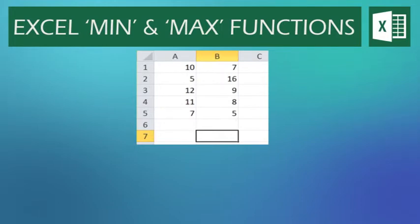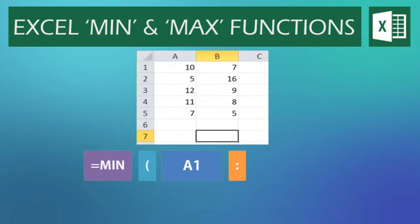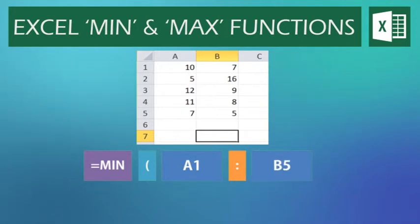MIN and MAX can also be used to find the smallest or largest value from a range of given cells. In this case, I want to look at all 10 cells from A1 to B5 and find out which is the smallest and which is the largest. To find out the smallest, I would type equals MIN, open brackets. Then the first part of the cell range, which is the top left-hand corner, in this case A1. As it is a cell range, I then use a colon before giving the other part of the cell range, in this case the bottom right-hand corner, which is B5. I would then close the brackets to complete the formula.